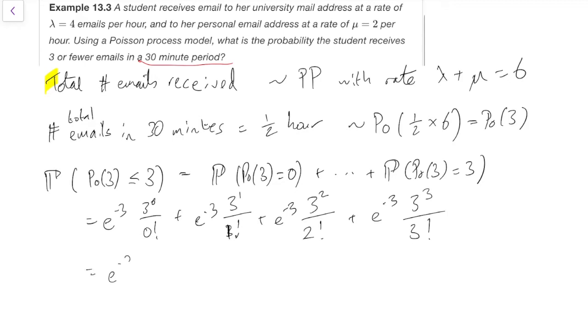If you count all these up, that's e to the minus 3 times 1 plus 3, 3 squared is 9 divided by 2 is 9 over 2, 3 cubed is 27, that's 9 over 2 as well. So that comes out as 9 over 2 plus 9 over 2 is 9, plus 3 is 12, plus 1 is 13. That's just 13 e to the minus 3, which I calculated before we got here. And it was 0.647, or about 65%.